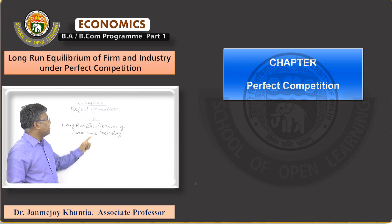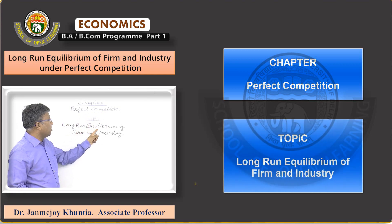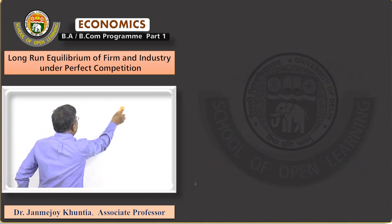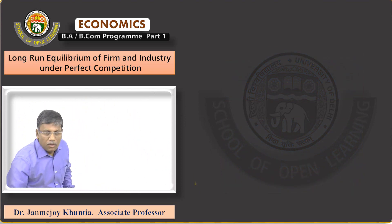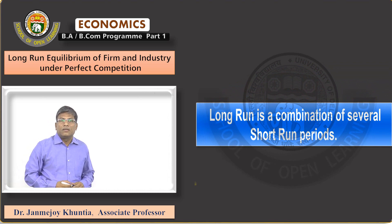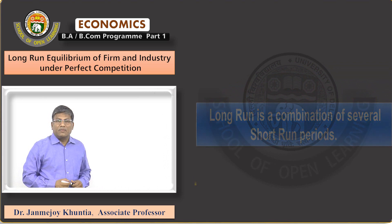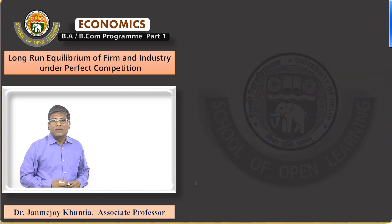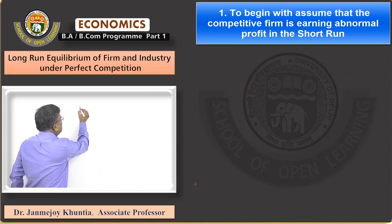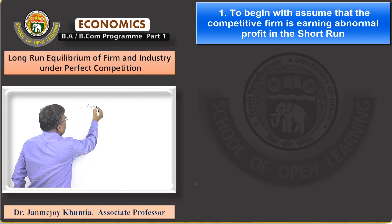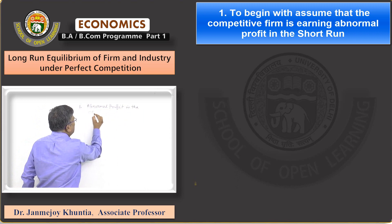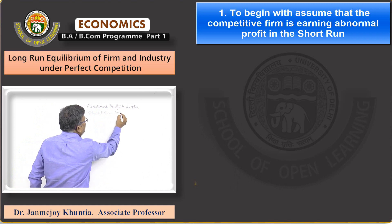Chapter: perfect competition. The topic is long-run equilibrium of firm and industry. Long run can be taken to be a combination of many short periods. Assume that the competitive firm starts in the short run, and let us say that the firm is earning abnormal profit in the beginning — this is the first step: abnormal profit in the short run for the firm.